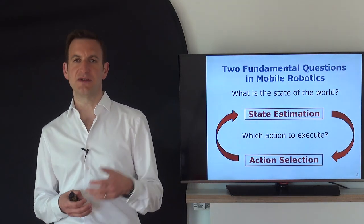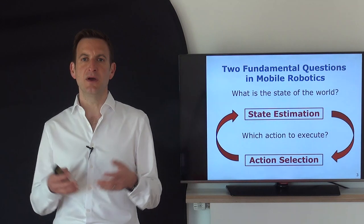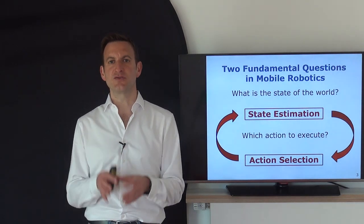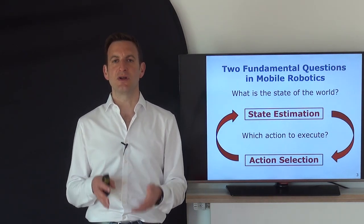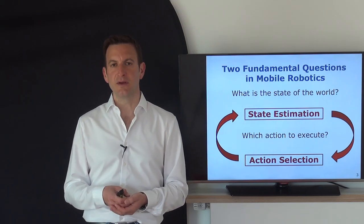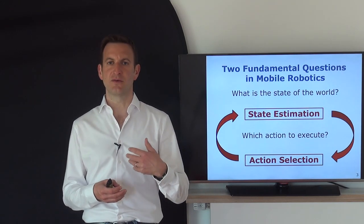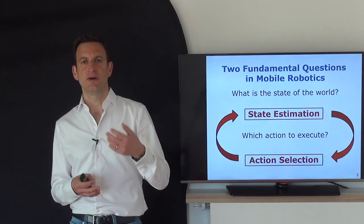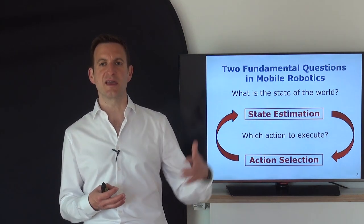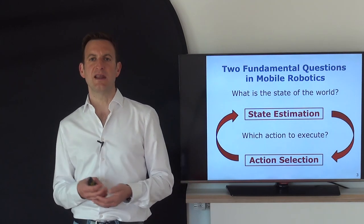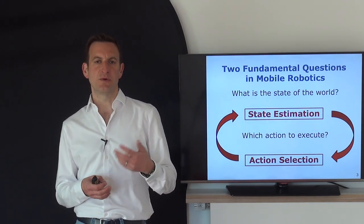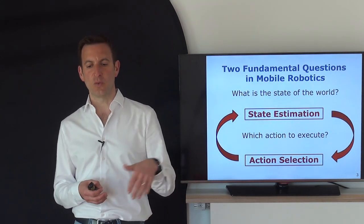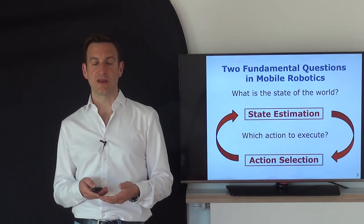These are two problems which are relevant here. The state estimation problem takes sensor information and tries to derive relevant information or models. The second part is using this information, how can we select the best action to execute? The action that the system is executing can have an impact on the perception and state estimation system, so we have a closed loop setup here.